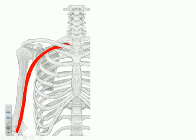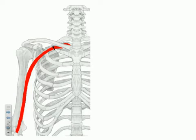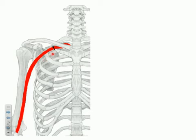The first boundary to be aware of is the boundary between the subclavian and the axillary artery, and that occurs just past the level of the first rib. Everything proximal to this point is considered part of the subclavian artery; everything distal to this point is considered part of the axillary artery.